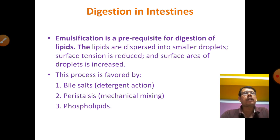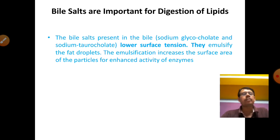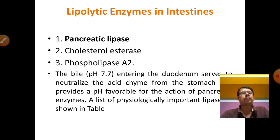Bile salts are important for lipid digestion. There are two types: sodium glycocholate and sodium taurocholate, which lower surface tension and emulsify fat droplets, ultimately increasing the surface area of particles to enhance enzyme activity. The lipolytic enzymes present in the intestine include pancreatic lipase, cholesterol esterase, and phospholipase A2. Pancreatic lipase digests lipids in the small intestine at pH 7.7. All compounds go to the small intestine with its large surface area, are absorbed into the bloodstream, and go to cells.